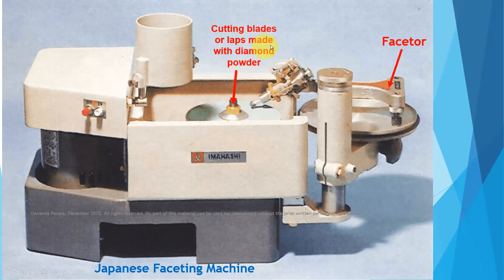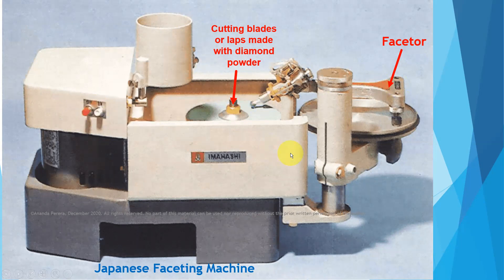These are the cutting blades, or laps, made with diamond powder. This tank provides water dropping to the lap. This is the on/off switch. The maker is Imahashi — it is the Japanese method, and this machine is very popular in Sri Lanka.